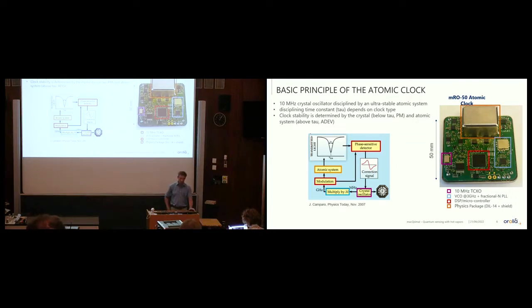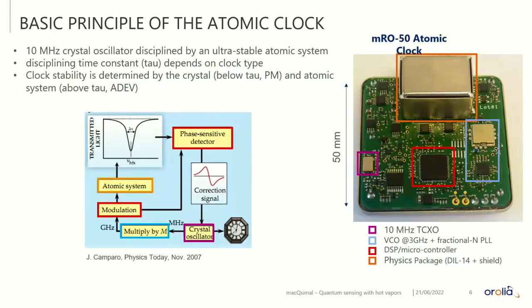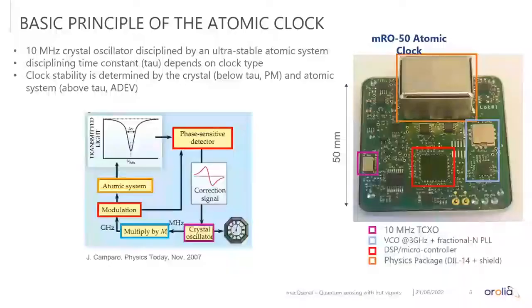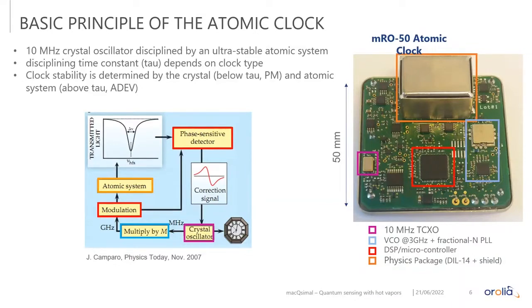On the right-hand side, you see the MRO atomic clock again. It's roughly 50 by 50 millimeters. We can use this clock to recall briefly the operating principle of an atomic clock. In one sentence, an atomic clock is a crystal oscillator that's disciplined to a very stable, ultra-stable atomic system.